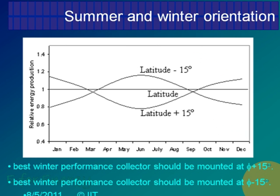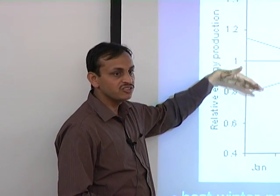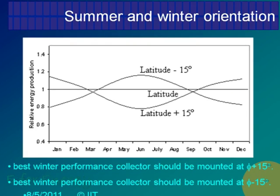If you fix at the latitude and I have tried to plot what happens if you put it at latitude plus 15 and latitude minus 15: if you put latitude minus 15, your generation is maximum in June and July. If you put latitude plus 15, your generation is maximum in January, February, December — your winter months. So if you want to maximize your collection in the winter month, you should put latitude plus 15.